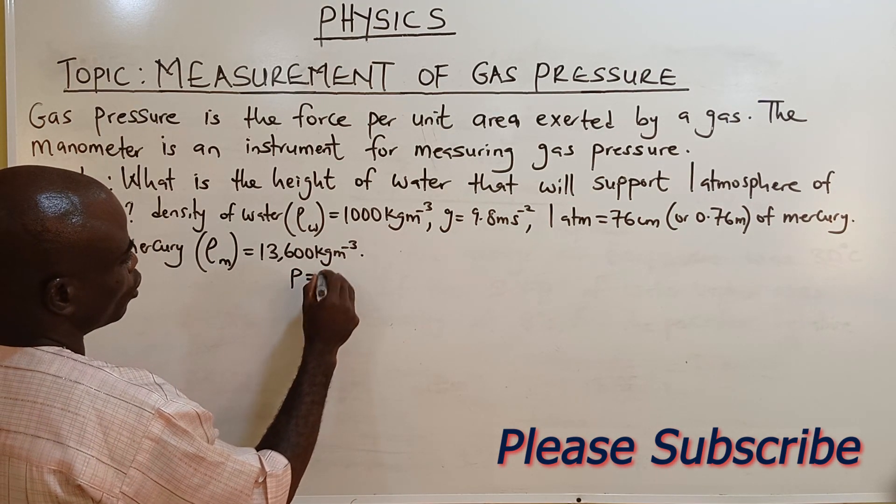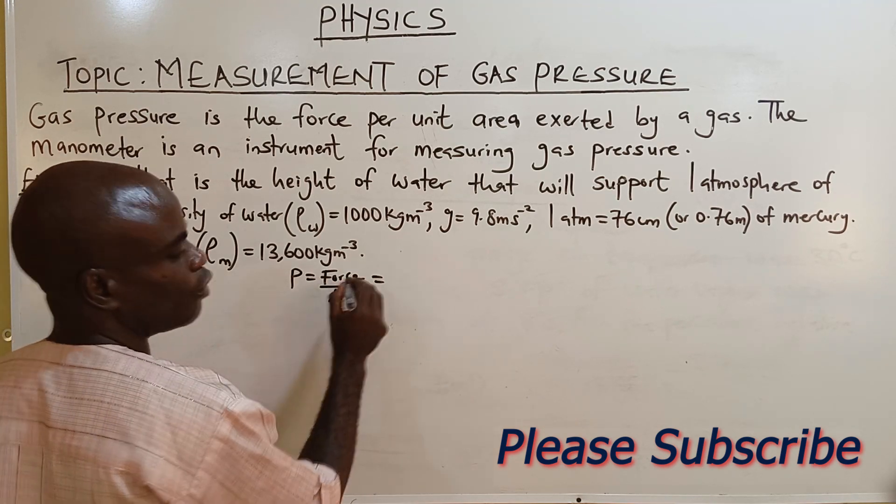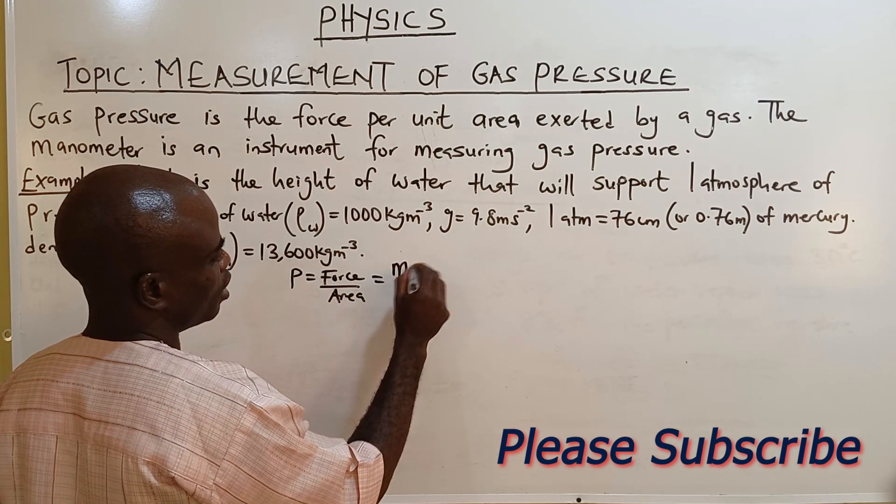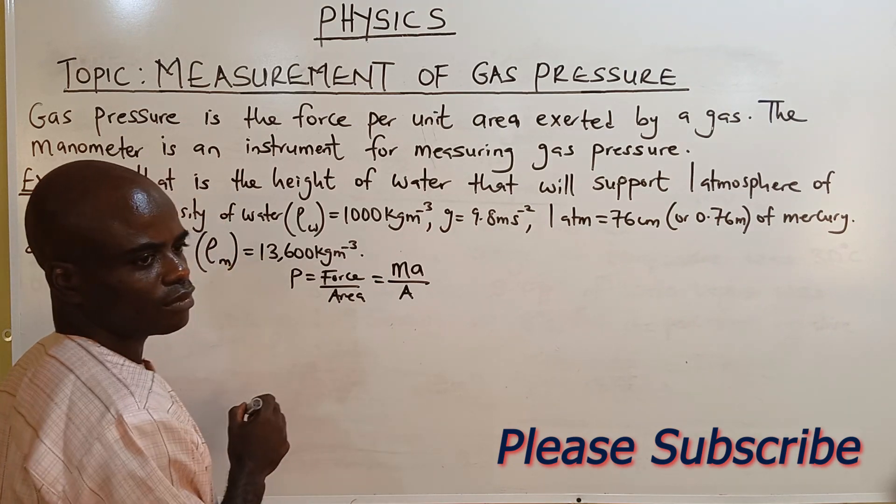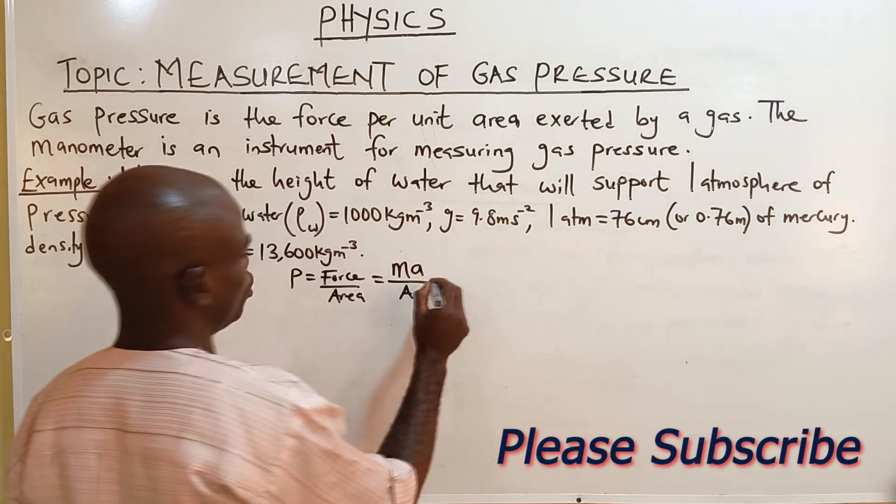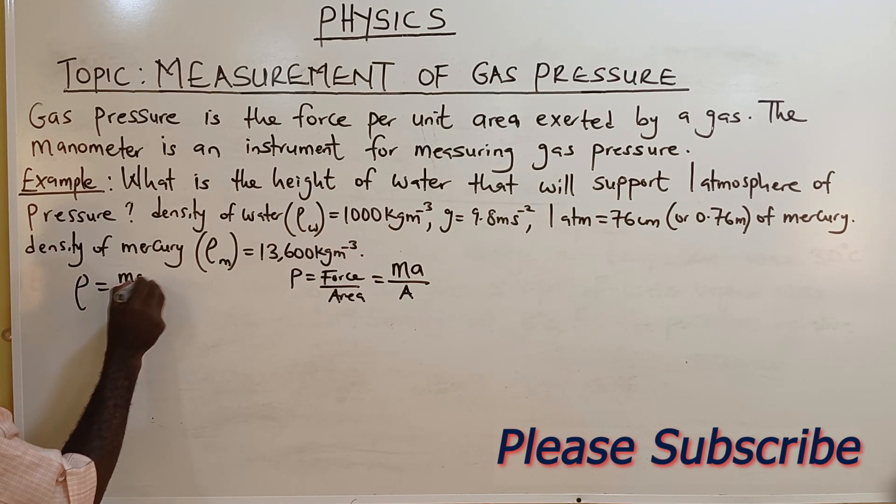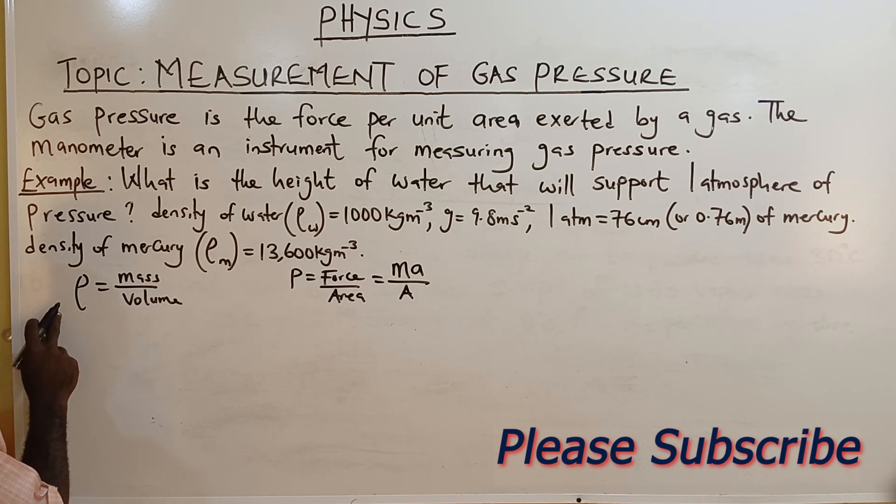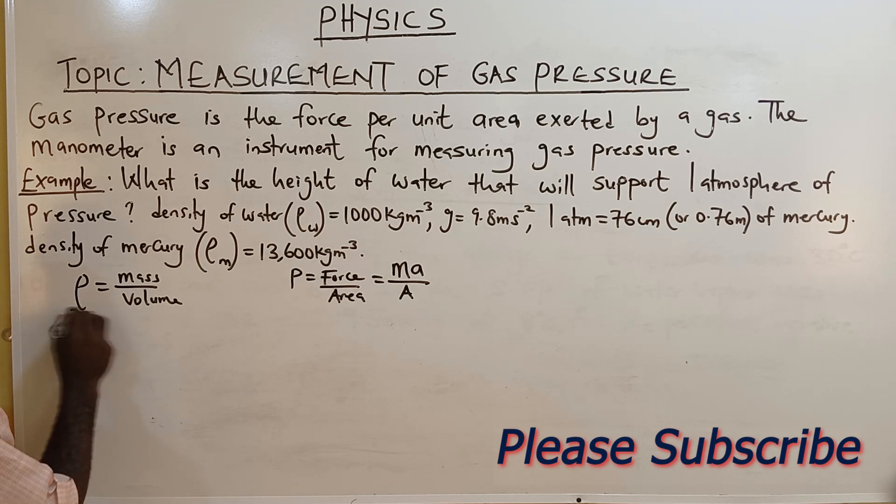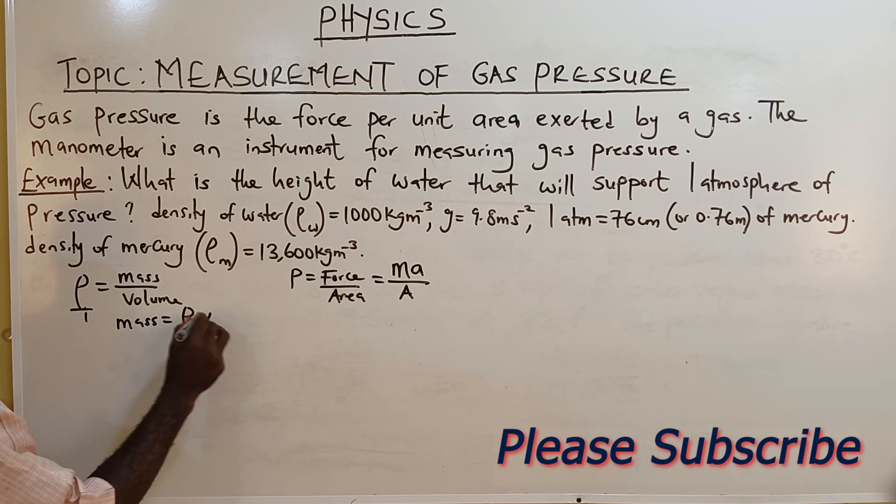We have pressure to be force over area which is mass times acceleration over area. Area is length and breadth. We have density equals mass over volume. When you cross multiply, you have mass equals density times volume.